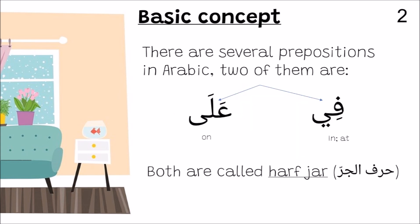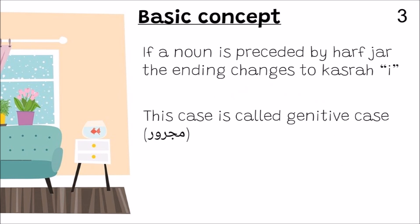Basic concept number two: there are several prepositions in Arabic; two of them are fi and ala, both are called harf jar. Concept three: if a noun is preceded by a harf jar, the ending changes to kasrah. This case is called genitive case, or majroor.